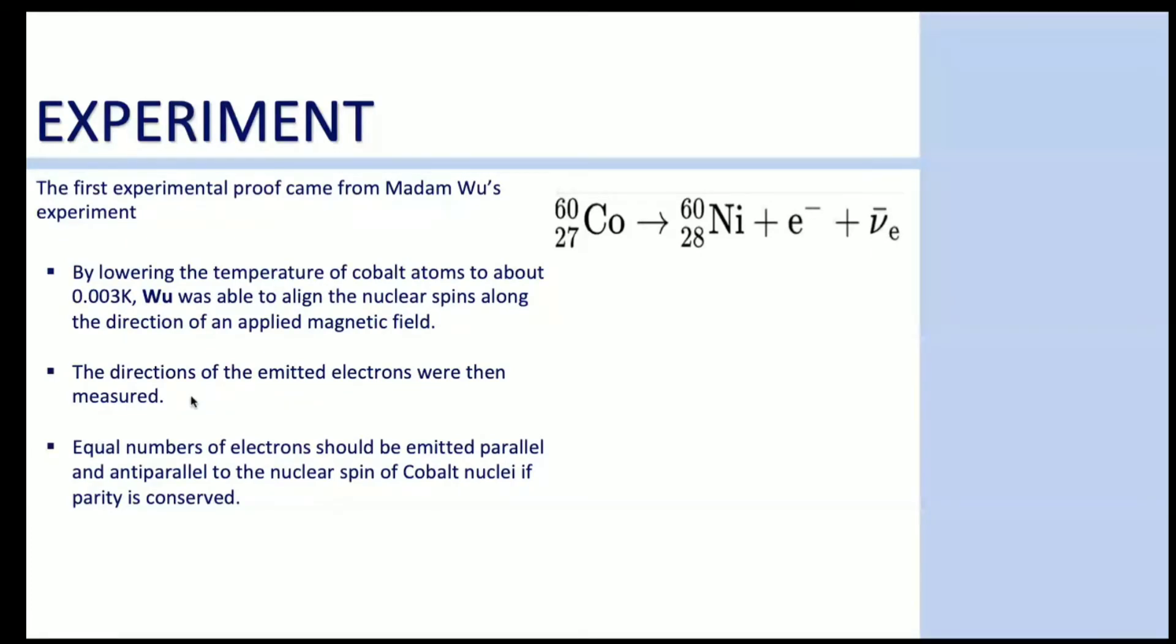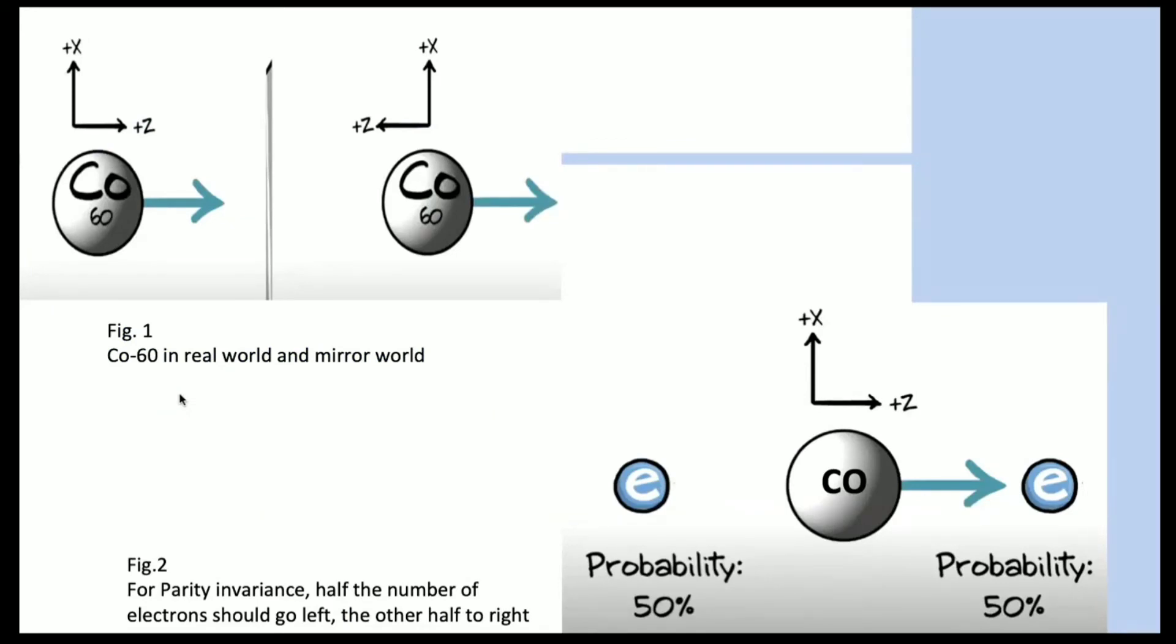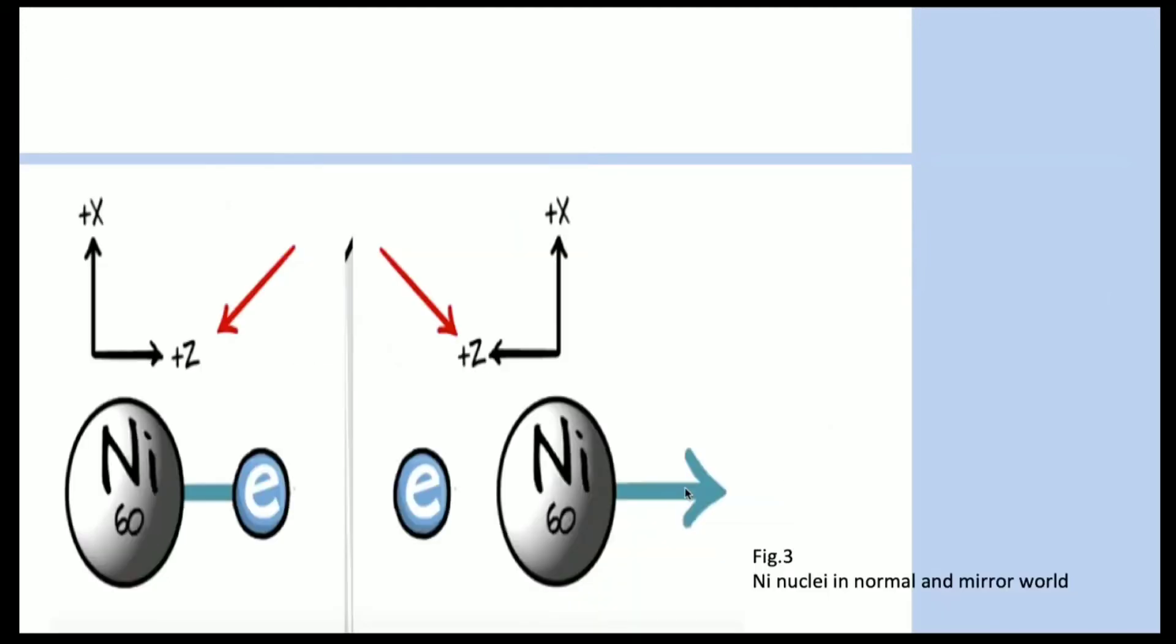To see how this works under parity symmetry, consider the mirror version of the experiment where the z-axis is flipped but the direction of spin is not, because axial vectors like spin do not change under parity. In the mirror world and the real world, the spins are the same. If parity is invariant, then the electron is equally likely to go in either direction with 50-50 probability, so both real and mirror image experiments give the same results. However, if electrons were emitted in a preferential direction, say positive z, then in the mirror they would go in negative z because momentum flips sign under parity. This would allow us to distinguish between the mirror world and our regular world.